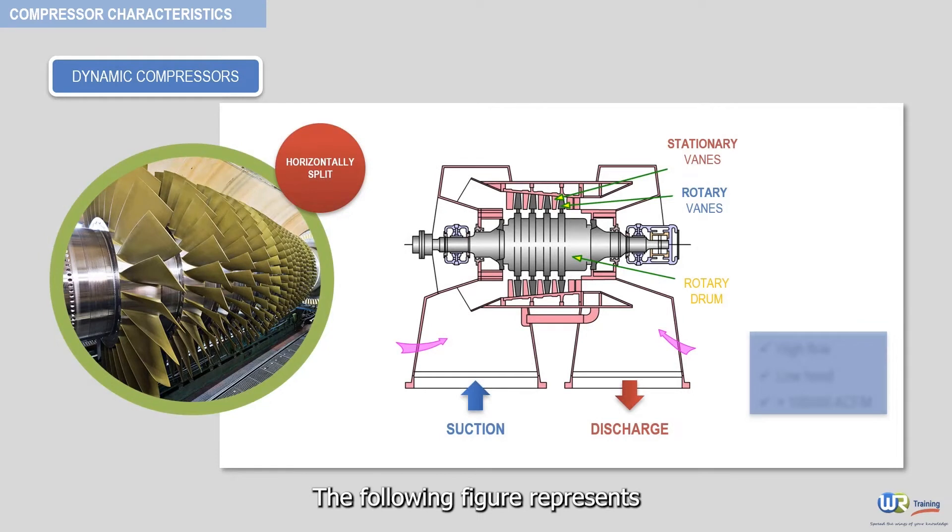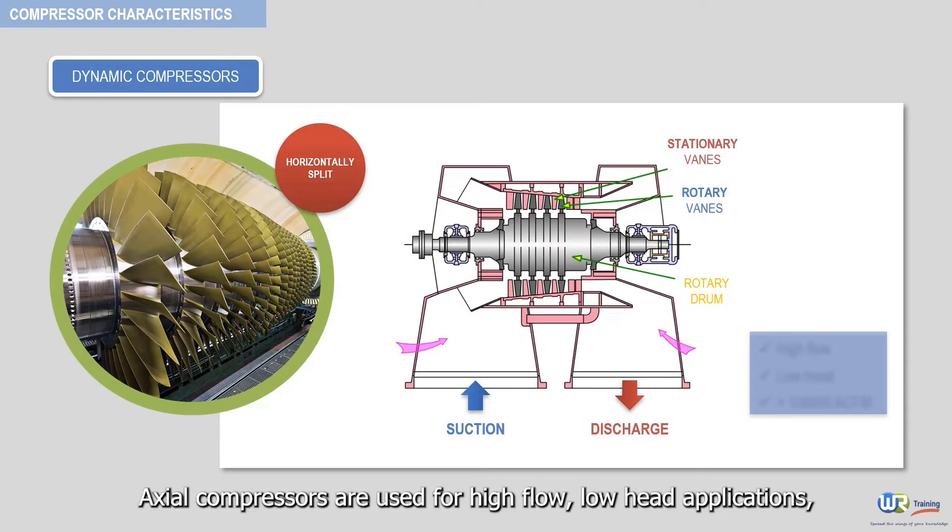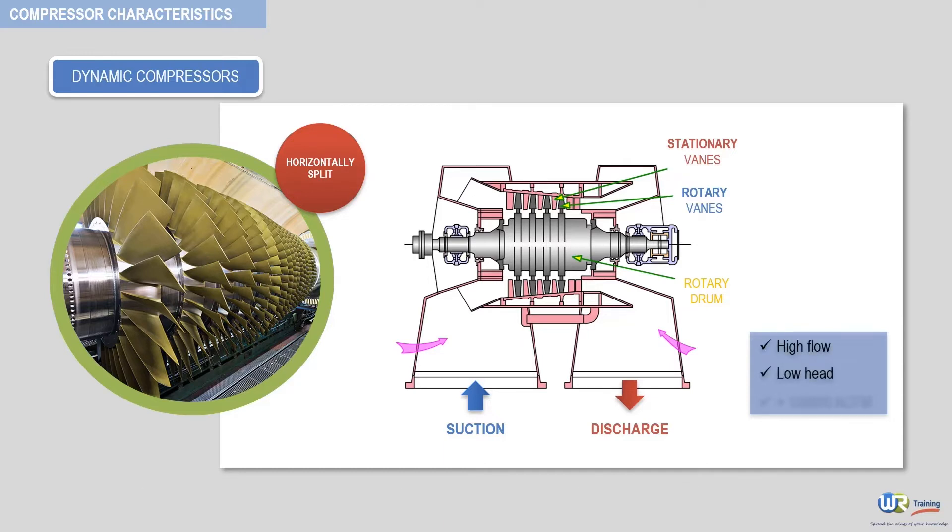The following figure represents a typical assembly drawing of an axial compressor. Axial compressors are used for high flow, low head applications, usually above 100,000 actual cubic feet per minute inlet volume flow.